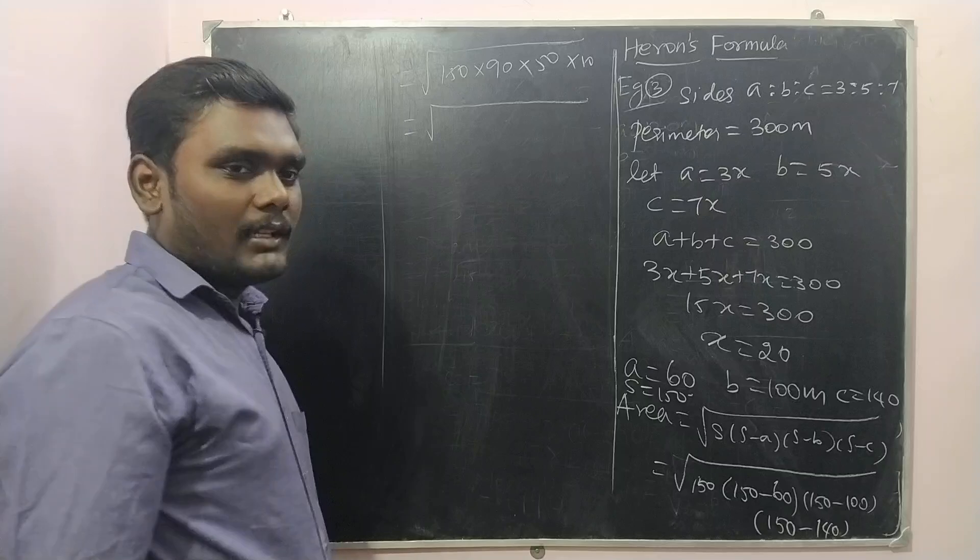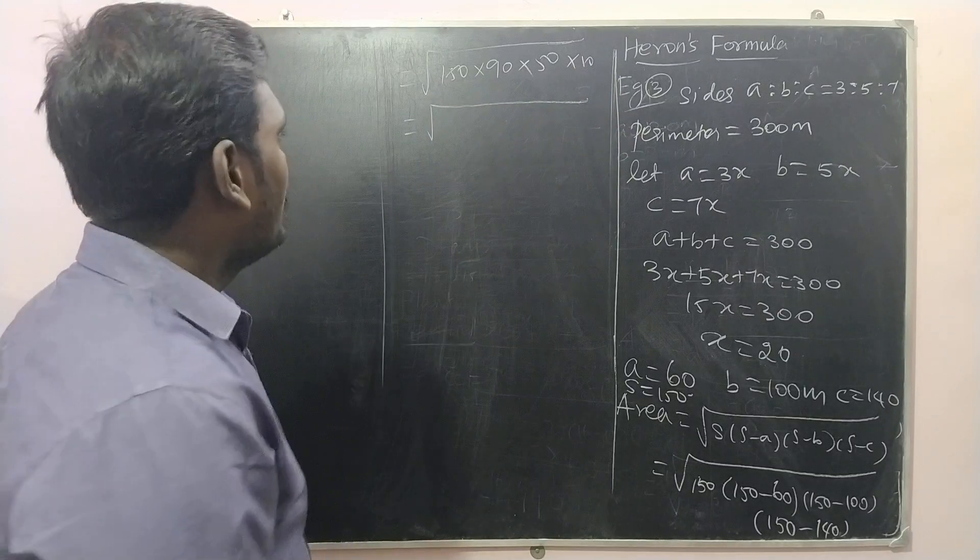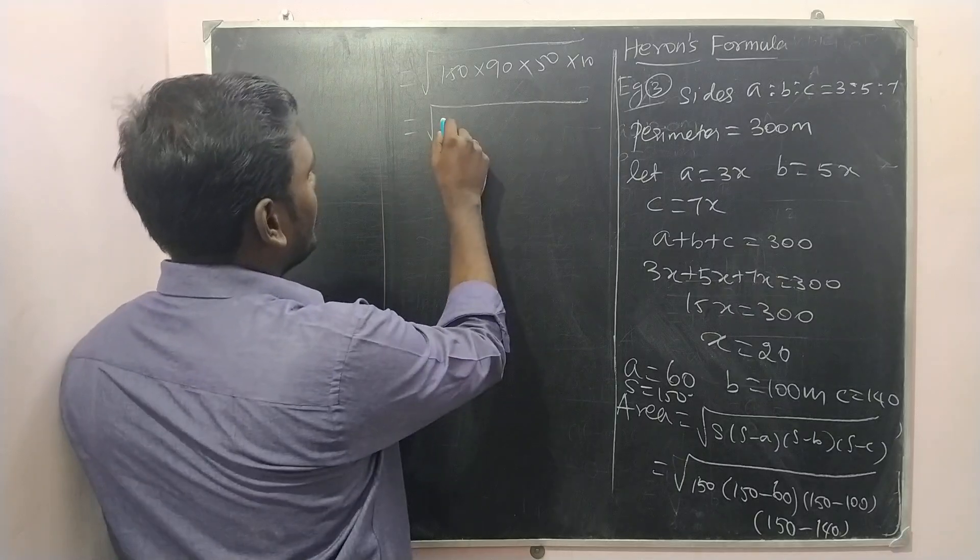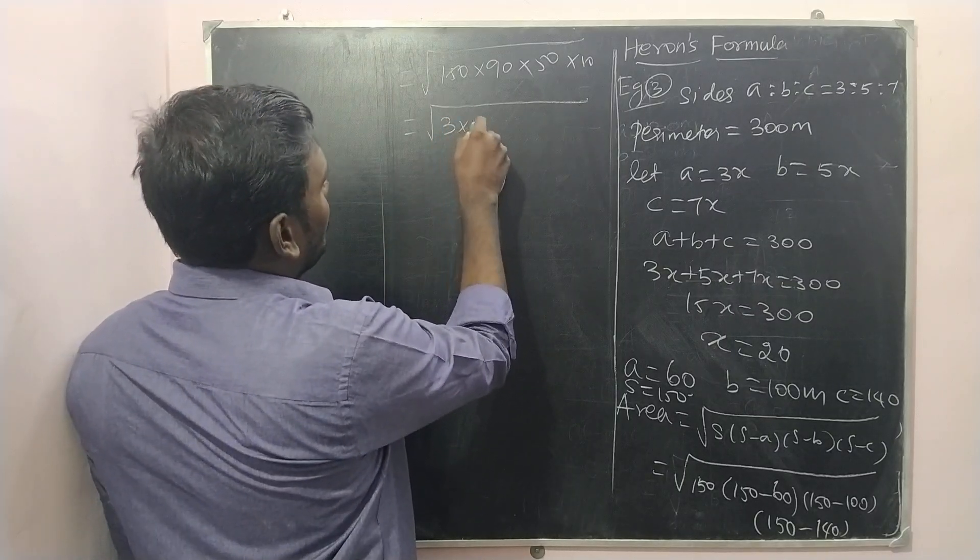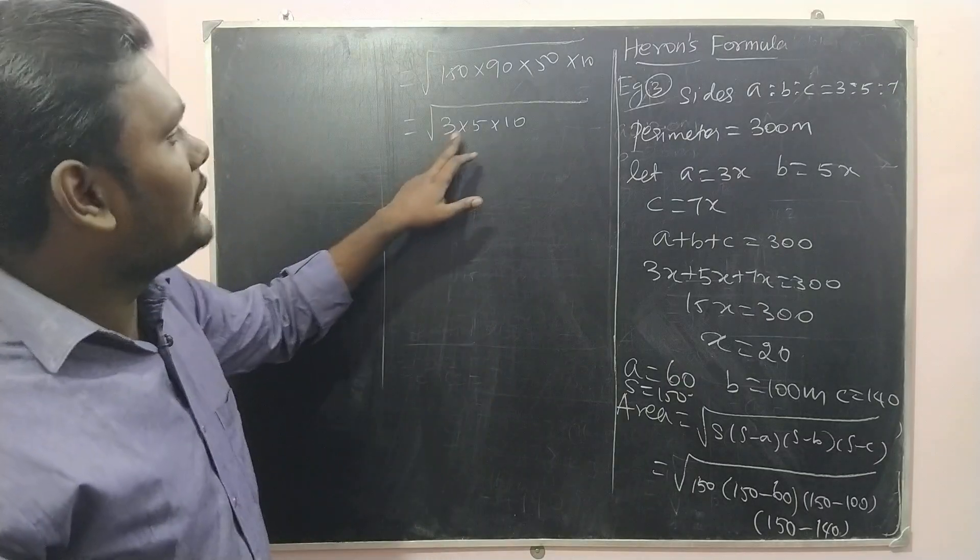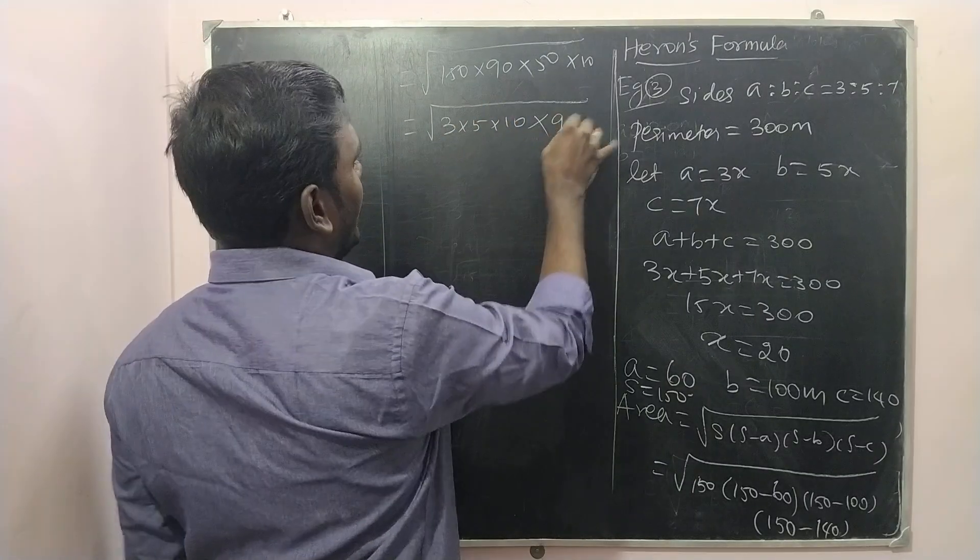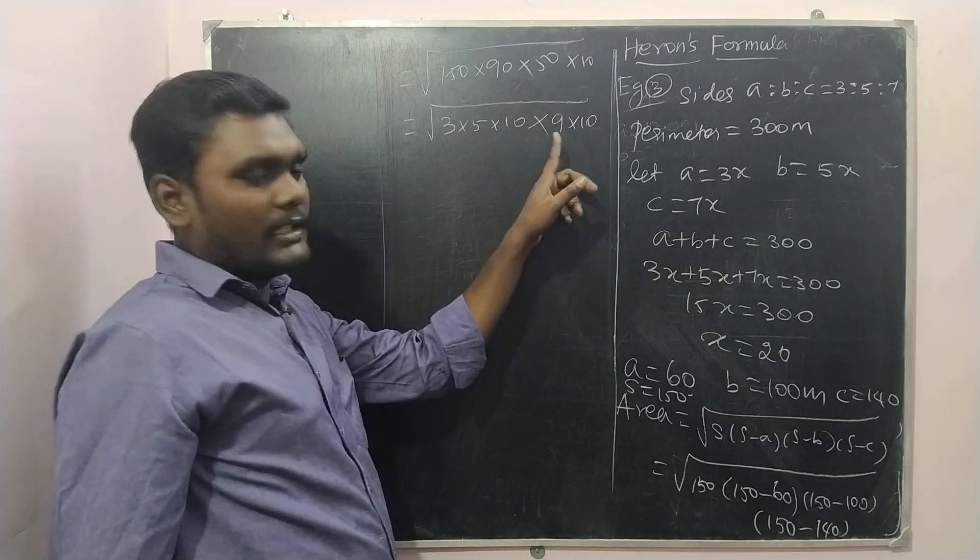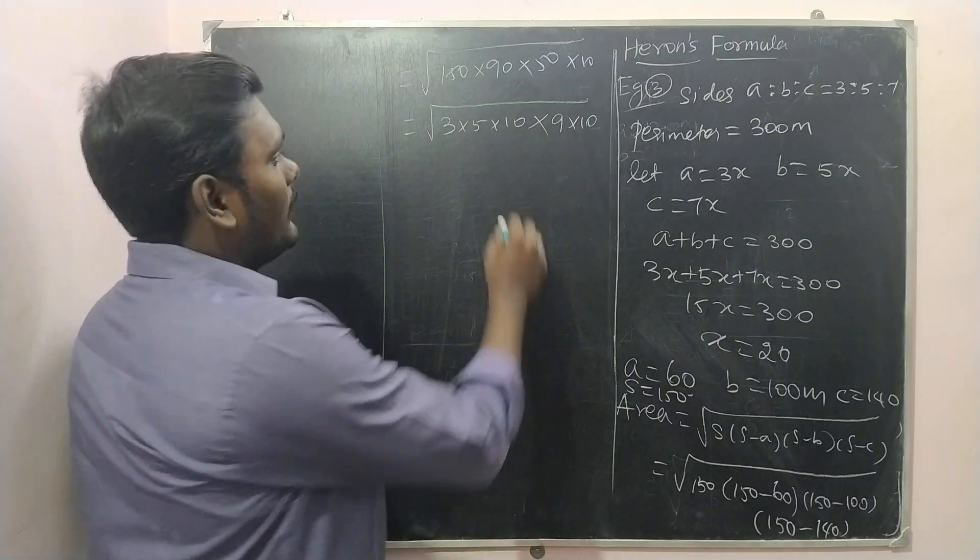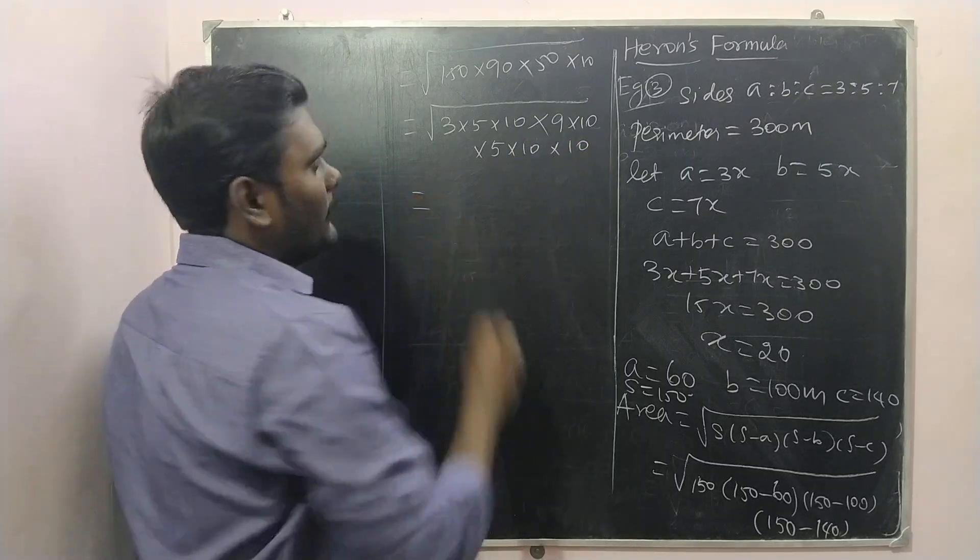It is easy that we can take factorizing this. All of these are multiples of 10. So this one I am going to write it as 3 into 5 into 10, because 15 into 10 we can write. And then 90 we can write it as 9 into 10 because 9 can be taken out from the root. And then 50 can be written as 5 into 10, and then 10 can be written as it is.